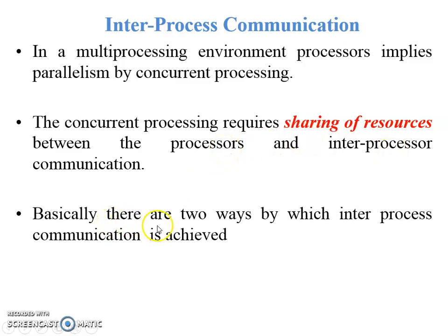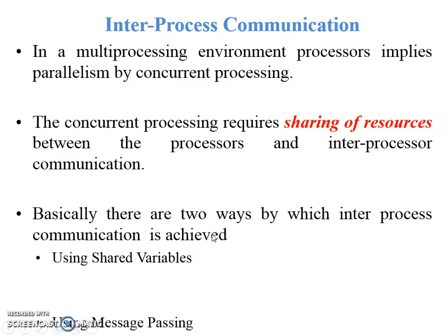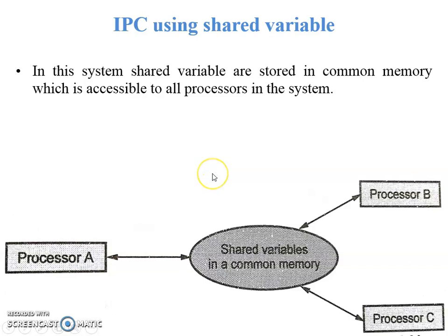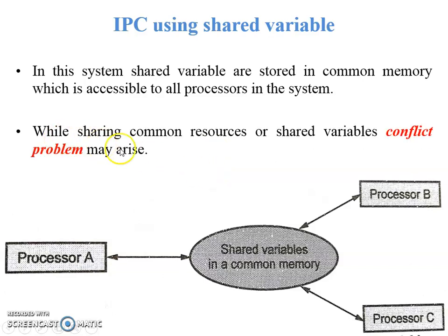There are two ways by which inter-process communication is achieved: first, using shared variables, and second, using message passing. In the shared variable method, variables are stored in common memory. Different processors communicate with this common memory — called shared memory — and the variable stored inside is accessible to all processors connected with it, so it is called a shared variable.